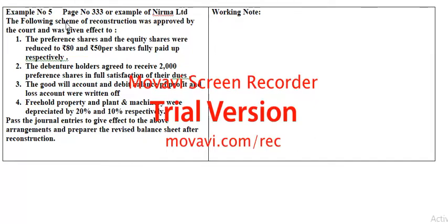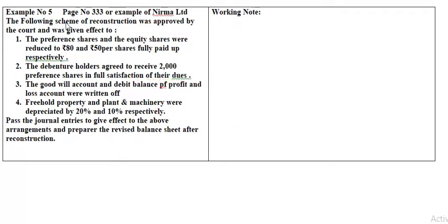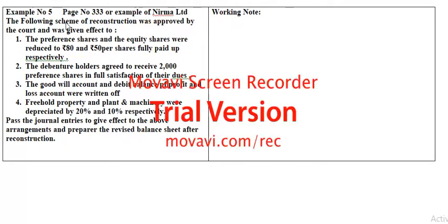Intangible assets 50,000. Current assets: inventories 1 lakh 70,000, trade receivables 2 lakh 10,000, total assets 13 lakh 80,000. Authorized capital: 6,000 preference shares of rupees 100 each — that is 6 lakh — and 10,000 equity shares of rupees 100 each — that is 10 lakh — total authorized capital 16 lakh. The issue is 4,900 preference shares at rupees 100 each.